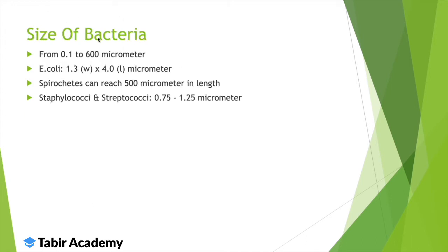The size of bacteria is microscopic — you can't see them with the naked eye; you need a microscope. Their measurements are in micrometers and sometimes even nanometers, ranging from 0.1 to 600 micrometers overall as a general range.